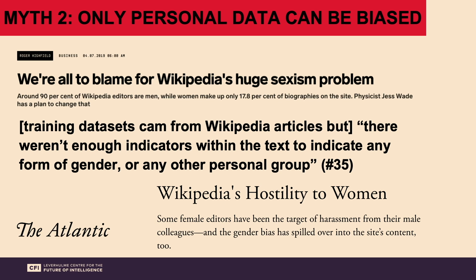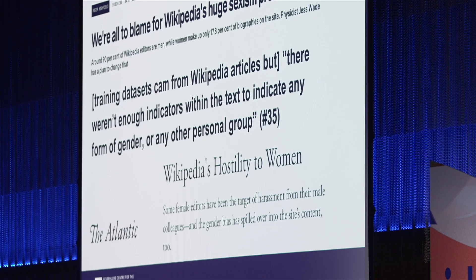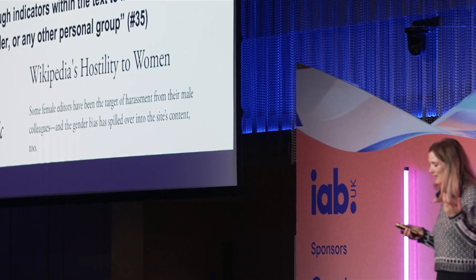The second big myth is that only personal data can be biased. We tend to think personal data means data about your race, gender, or ability. But a lot of data being used is Wikipedia data, and engineers often don't think Wikipedia can be biased. After all, isn't it just a big encyclopedia online? But actually, 90% of Wikipedia editors are men, and women make up only 17.8% of biographies on the site. So we need to think differently about what biased data actually is.